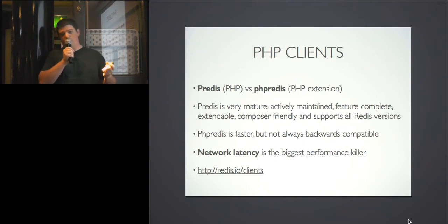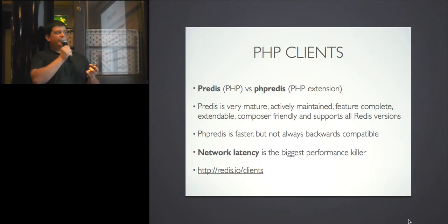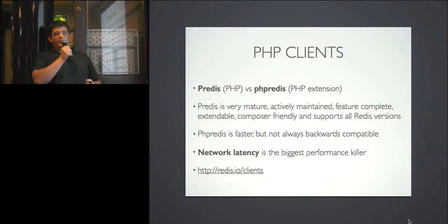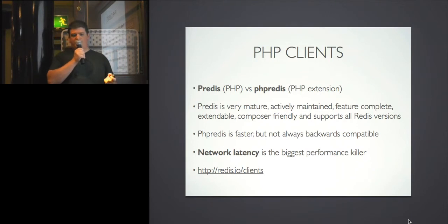Before getting started, let's talk about the PHP clients to access Redis. The two main maintained ones these days are Predis, written entirely in PHP, and phpredis, which is a PHP extension. Phpredis is much faster because every time you send a command you need to implement a network protocol — doing that in C is much faster than in PHP. However, Predis is very mature, actively maintained, feature-complete, Composer-friendly, and supports all Redis versions from 2.0 to 2.8 and even 3.0.